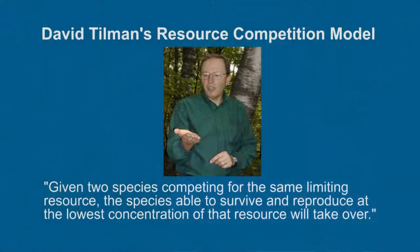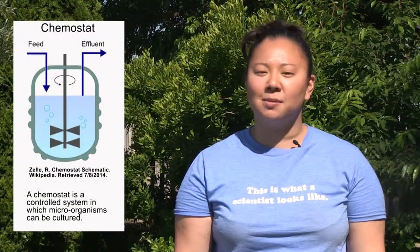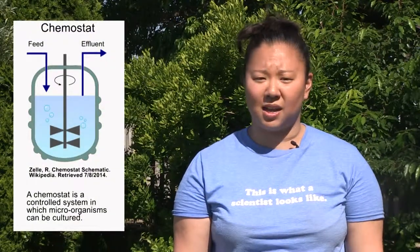In the mid-1970s, David Tilman developed a resource competition model which stated: given two species competing for the same limiting resource, the species able to survive and reproduce at the lowest concentration of that resource will take over. In theory, this makes sense, but Tilman developed his model in a controlled experimental chemostat.